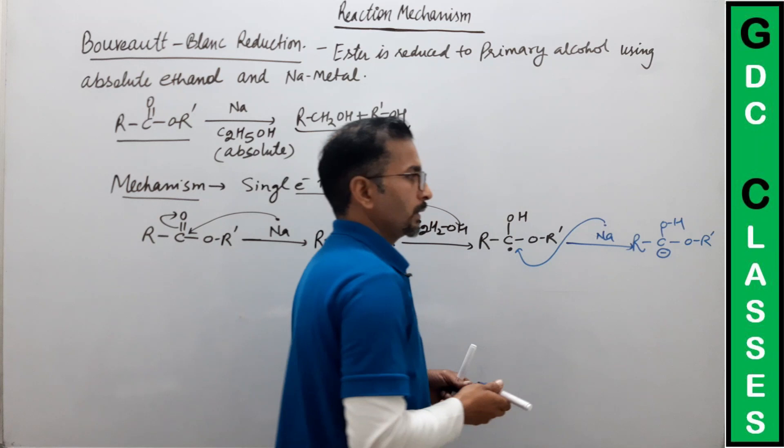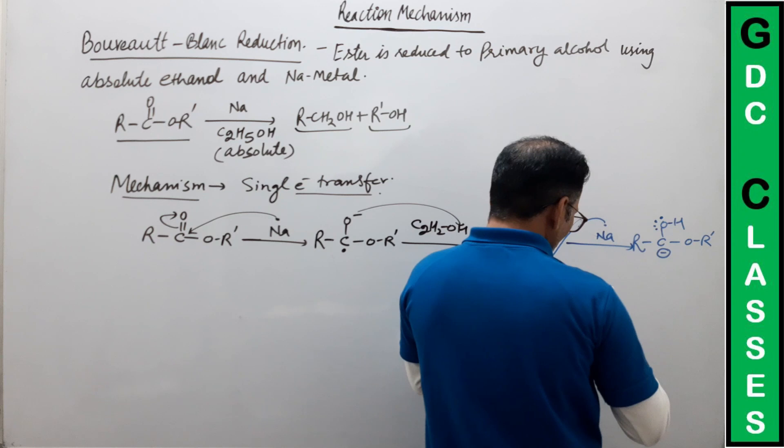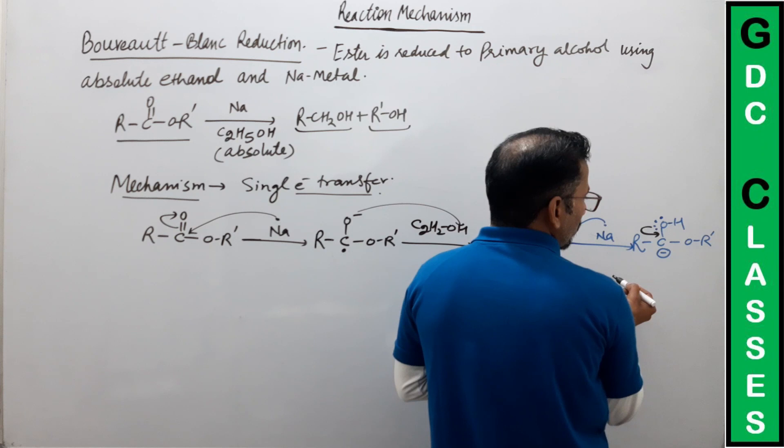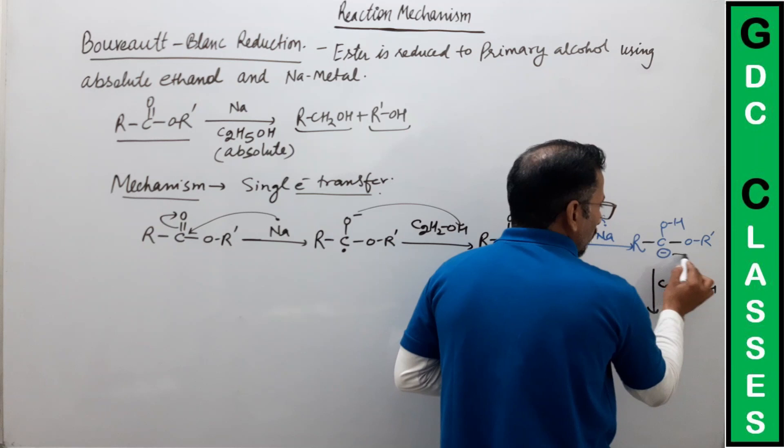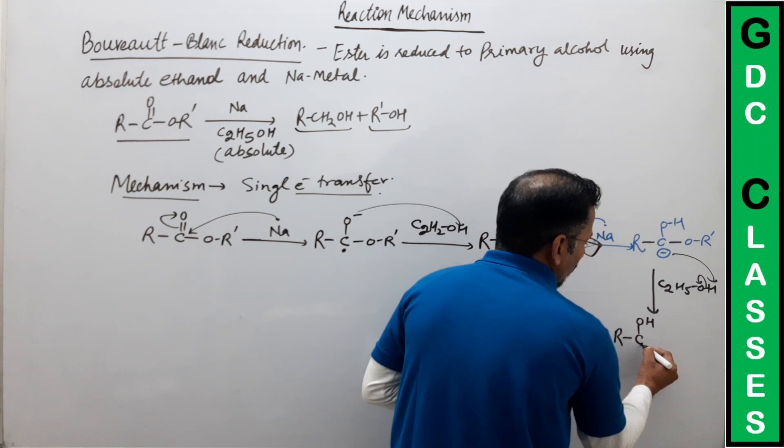Next step में क्या होगा? यहां पर जो दो lone pairs हैं, shift हो जाएंगे। फिर से ethanol आएगा और इसको proton देगा। यह bond यहां shift होगा। Next product हमारे पास बनेगा: R-C-OH, और यह O-R' — this is the condition.